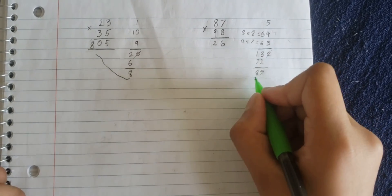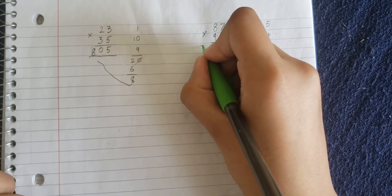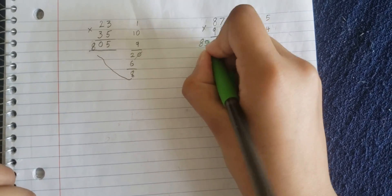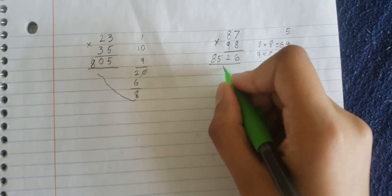Now, you take this and put this here, 8, 5, and there's your answer, 8, 5, 2, 6.